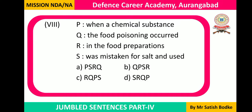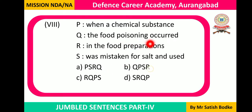Question number eight has a different format — the sentence is split into only four parts. The food poisoning occurred — 'occurred' is the verb used after the noun phrase. The food poisoning occurred when a chemical substance was mistaken for salt and used in the food preparations. It's a simple question. Our sequence is Q, P, S, R — option B.